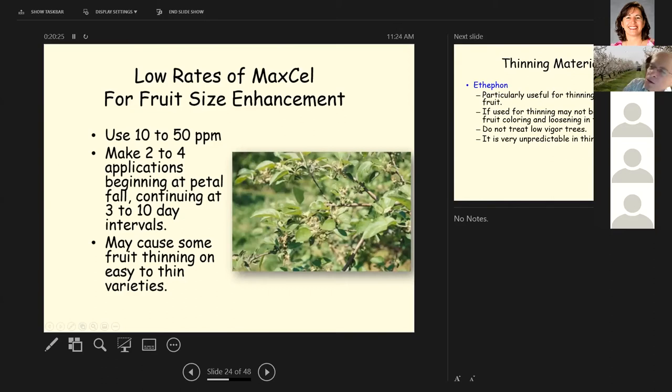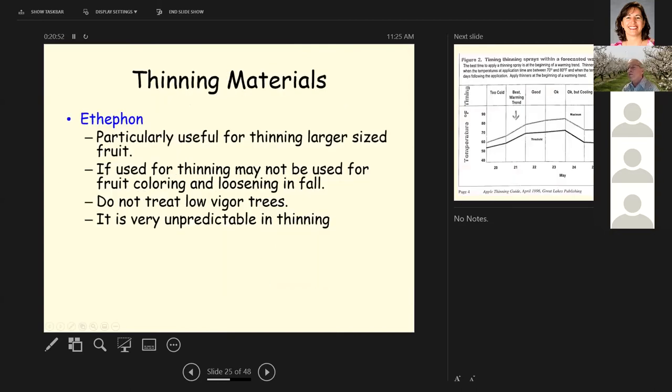Maxell can also be used for fruit size enhancement as opposed to thinning at low rates. Remember the thinning rate was 75 to 200 parts per million. Here we have 10 to 50 parts per million. And the recommendation is to make two to four applications beginning at petal fall and continue at three to 10 day intervals. May cause some fruit thinning on easy to thin varieties, but it will increase your fruit size.